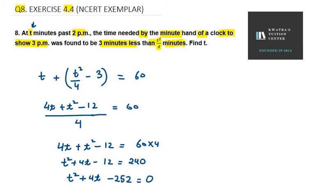Now you need to do factorization. You need to factorize 252 such that it makes 4. So 252 has two factors, 18 and 14. There is a difference of 4. 18 minus 14 is 4. So we can write it as t square plus 18t minus 14t minus 252 equals 0.